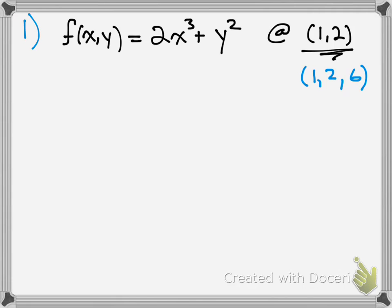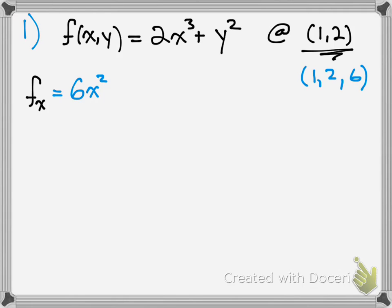Now we take the partial derivatives. The partial derivative with respect to x: take the derivative normally with respect to x, so 3 times 2 gives 6x squared. Since y is treated as a constant, it contributes 0, so we get 6x squared. The partial derivative with respect to y: we treat x as a constant, so that goes to 0, and the derivative of y squared is 2y.